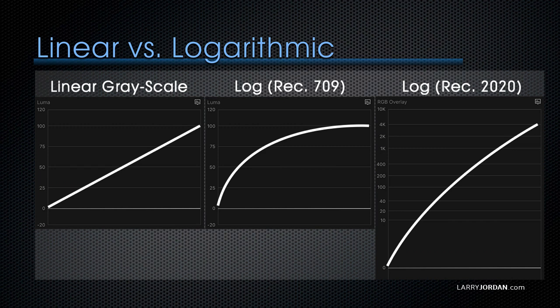By recording log, we're recording logarithmically. We capture the same amount of information in the blacks and the midtones, but we're recording far more information of the highlights, but squishing it into a very small space. Now, when we open a log file inside an NLE, it has a very washed-out look because we've captured this visual information from the point of view of the sensor.